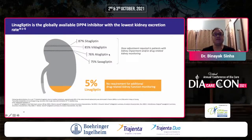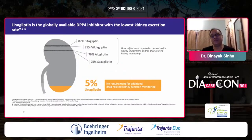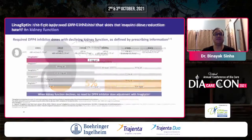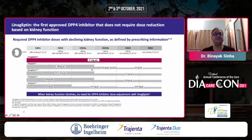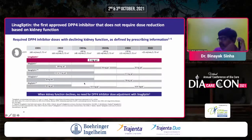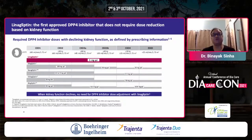Which is why all these other drugs need dose adjustment with declining eGFR — something we often fail to do. Data shows that failing to reduce dosage leads to worsened renal outcomes. This is probably why linagliptin is considered by many as the 'renal gliptin.' It is the first approved DPP-4 inhibitor that does not require dose reduction based on kidney function. Sitagliptin, saxagliptin, vildagliptin, and alogliptin all need dose reduction as kidney disease progresses — but not linagliptin.